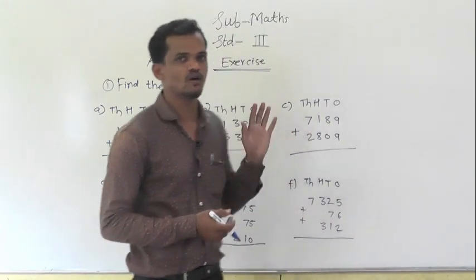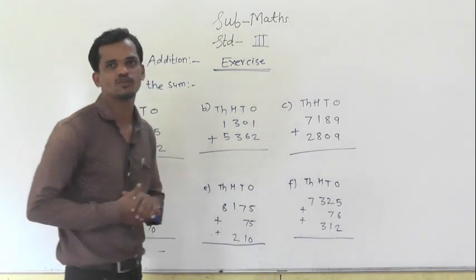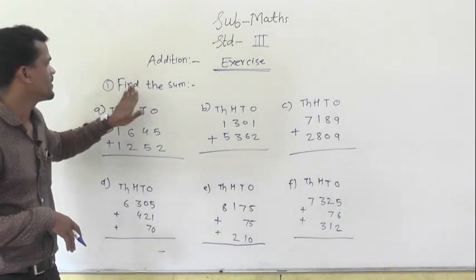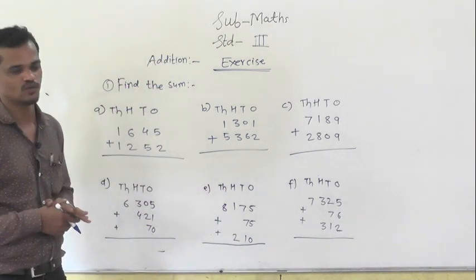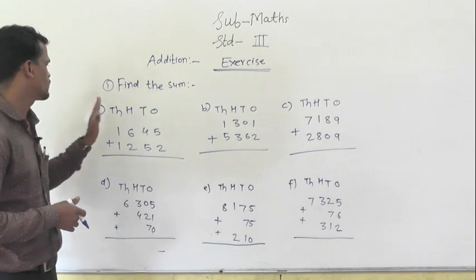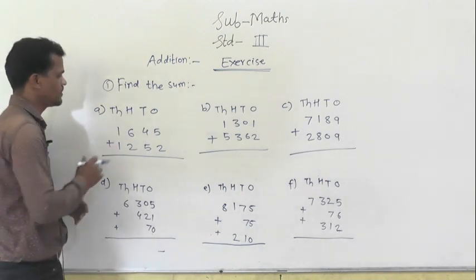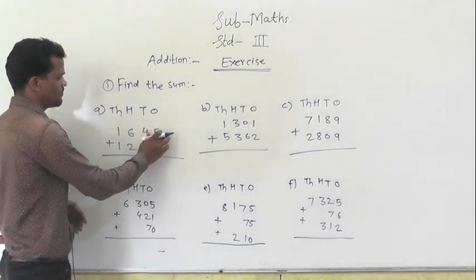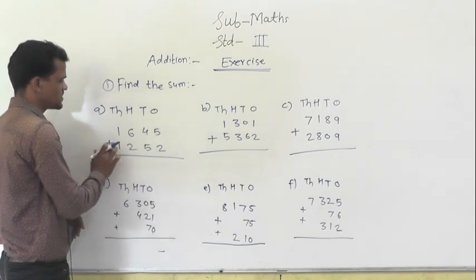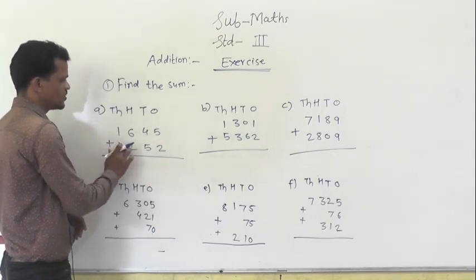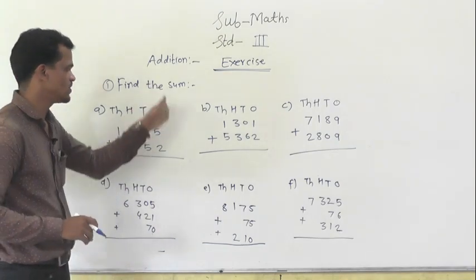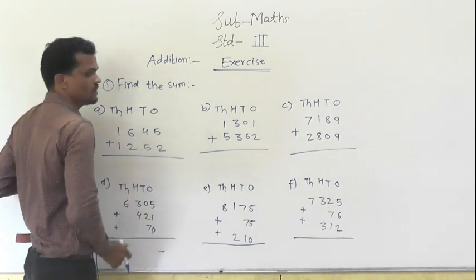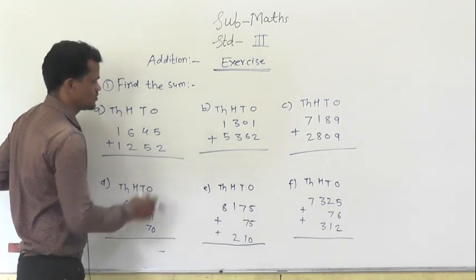Today we will solve exercises on the addition topic. First question: find the sums. So, solve A1: 1645 plus 1252. Always you have to start from the ones place, so add the columns.